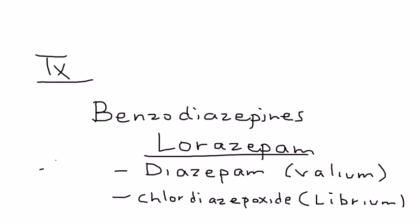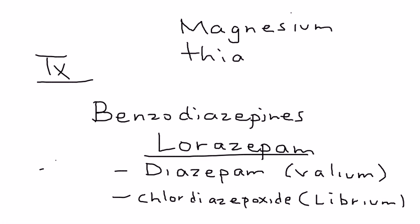In addition to the benzodiazepines used, there are also other things used to manage alcohol withdrawal. You need to correct their nutritional status. Magnesium is used. Thiamine is very important — it helps prevent encephalopathy. And usually you give IV fluids to help correct the electrolyte disturbances that can occur.